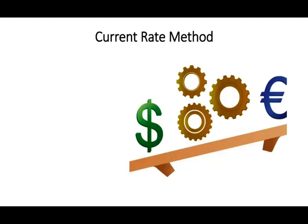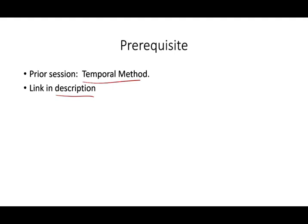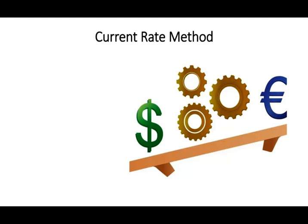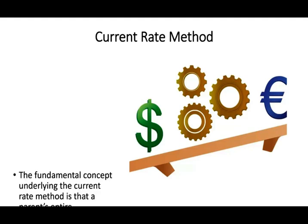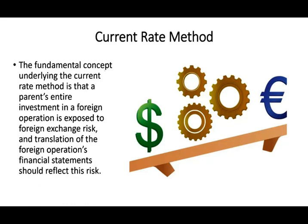What is the current rate method? The temporal method states that you should prepare your financial statements as if the parent company entered into those transactions. With the current rate method it's a little different. The underlying methodology is that you have an exposure to a foreign currency because you are operating in that foreign country. Therefore your financial statements should reflect that risk. The fundamental concept is that the parent's entire investment in a foreign operation is exposed to foreign currency risk, and the translation should reflect this.